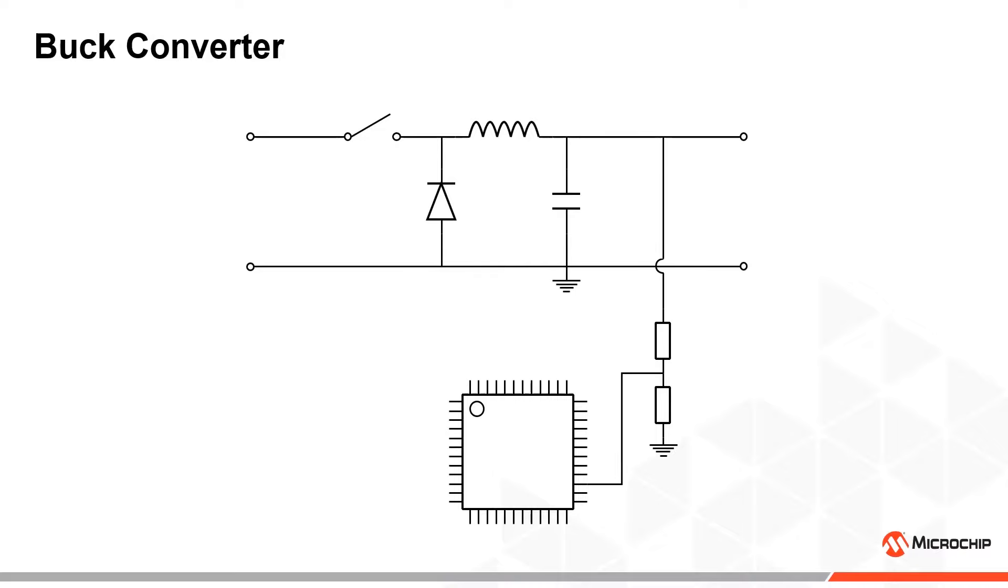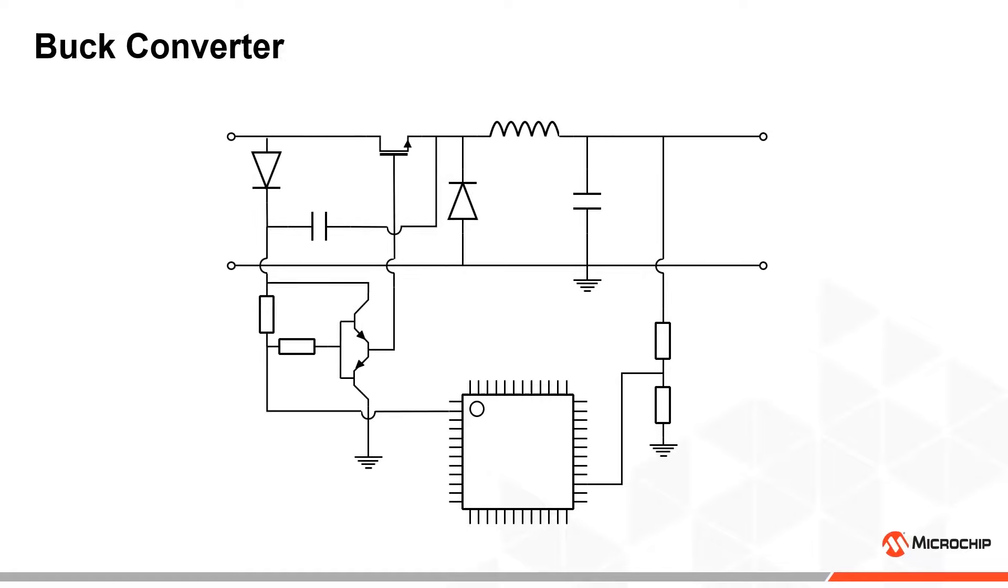Let's first replace the switch in our original buck topology with a transistor switching circuit. Using an NMOS transistor with a bootstrapping circuit, we can achieve high side switching with low on resistance and reliably switch higher voltages than the logic level voltage of the microcontroller.